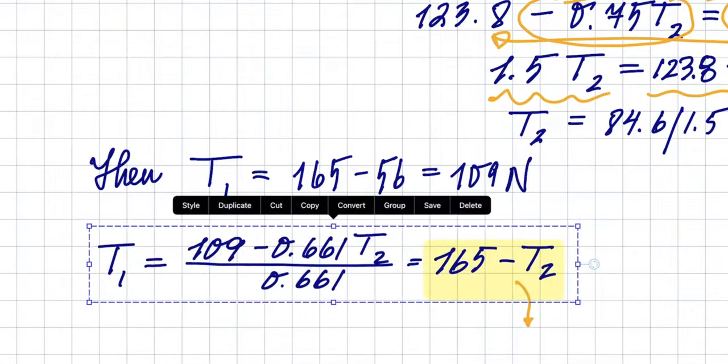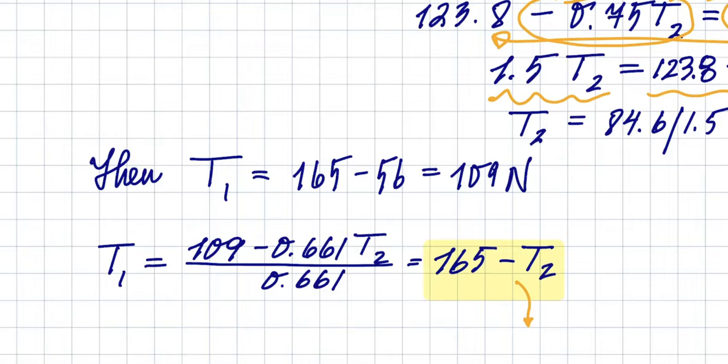Since we have this equation right there, then I can plug in my 56—which we just have—for 56.4, when rounded you end up with 109 newtons.